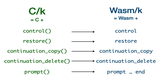We have added five instructions to WebAssembly. The control, restore, and continuation delete instructions provide support for one-shot continuations. The continuation copy instruction adds support for multi-shot continuations. And the prompt instruction adds support for delimited continuations. Before talking about the formal semantic design of WASM-K, we'll go through a number of examples in CK to get an intuition for how these extensions work.